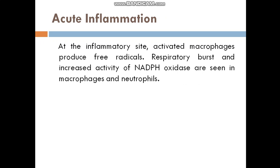Acute inflammation: At the inflammatory site, activated macrophages produce preradicals. Free fatty acids and increased activity of NADPH oxidase are seen in macrophages and neutrophils.